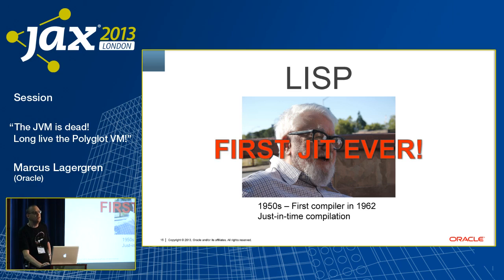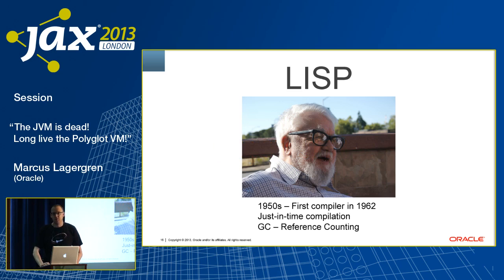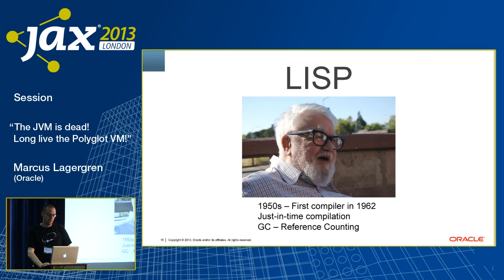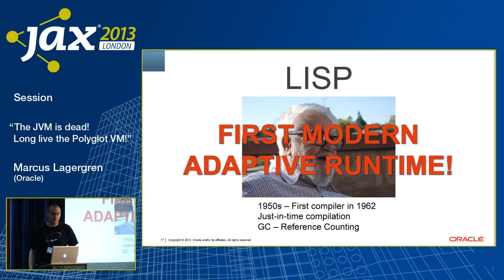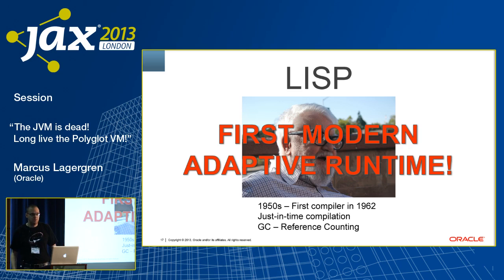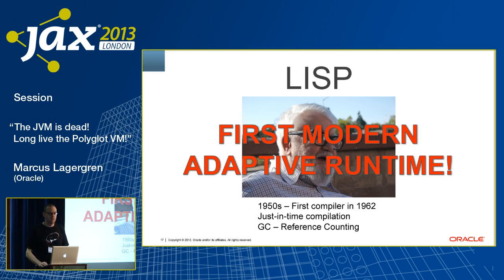The other thing unique in history was that Lisp had automatic memory management. It had garbage collection — not reference counting, but garbage collection — which is certainly another very fundamental part of a modern runtime. So one might say that the Lisp runtime was the first modern adaptive runtime in 1962. A lot of our ideas come from there. The Hotspot JVM JIT-compiles and garbage-collects — not with reference counting, but you get the concepts already.